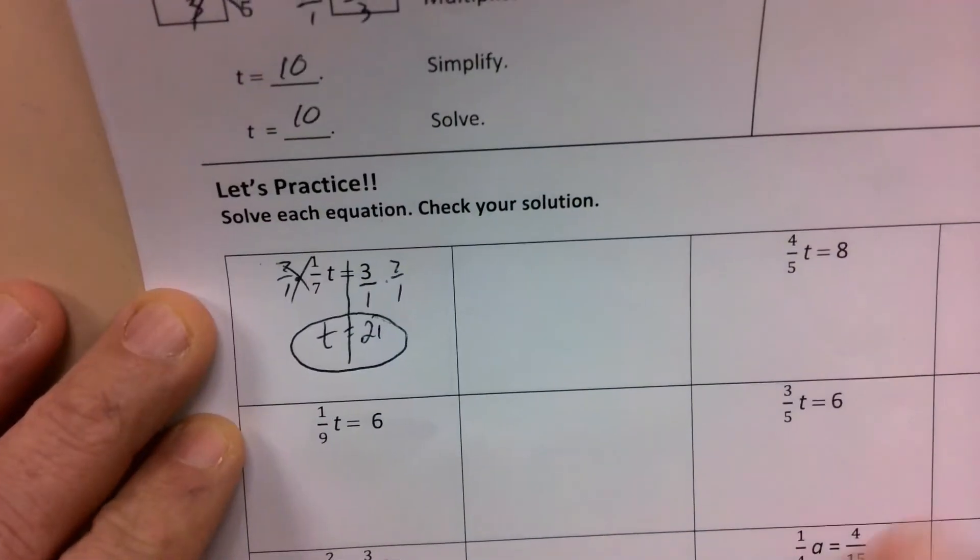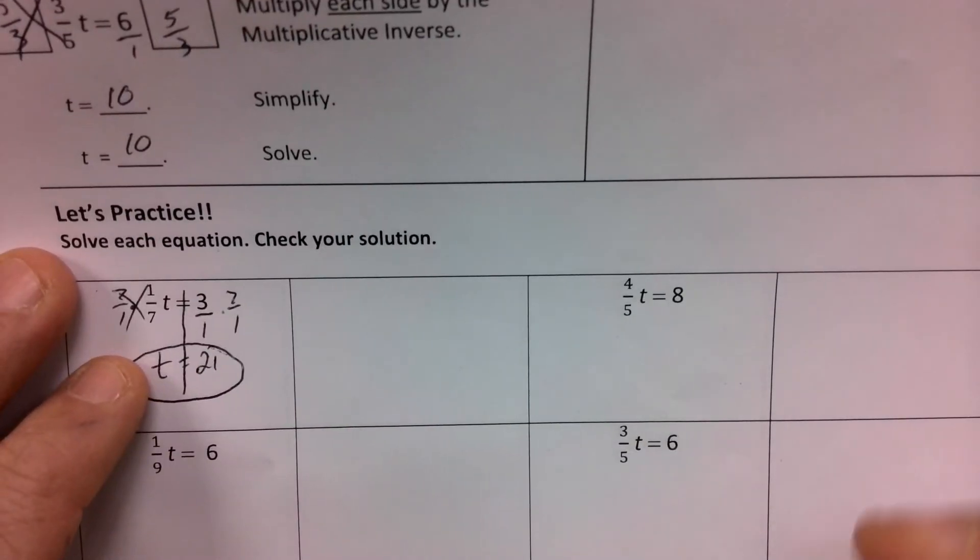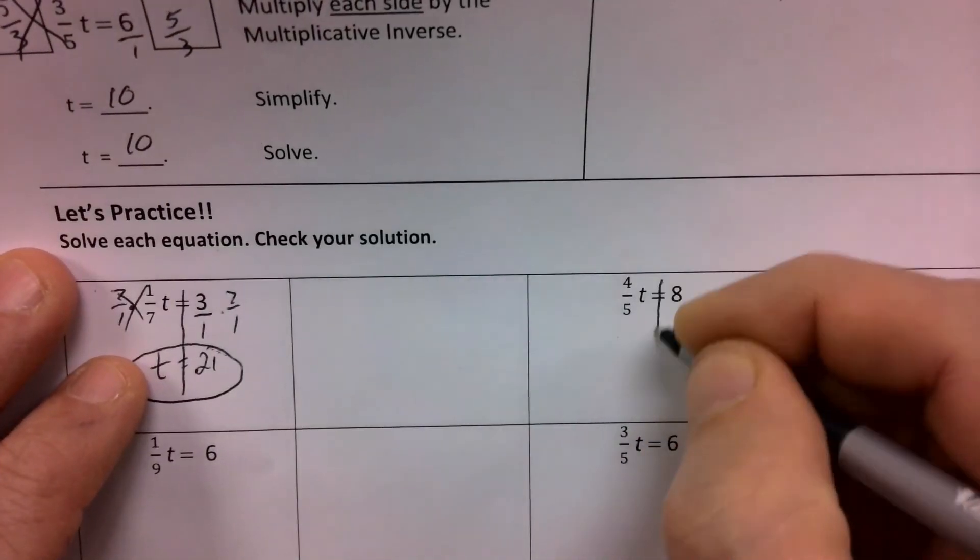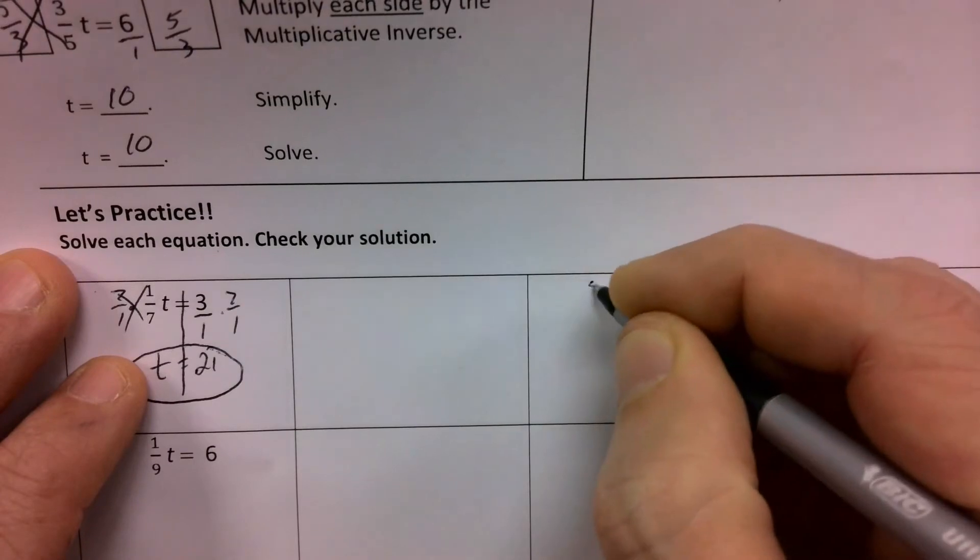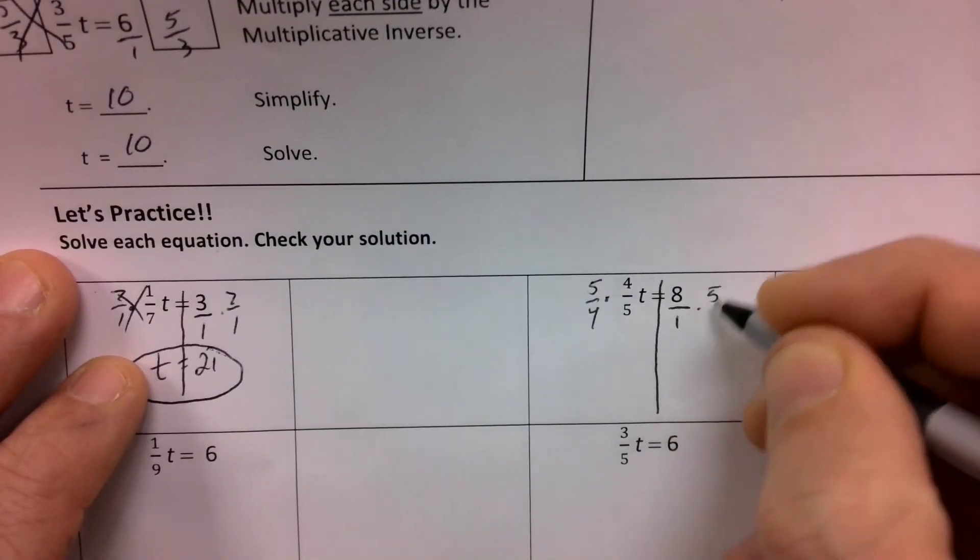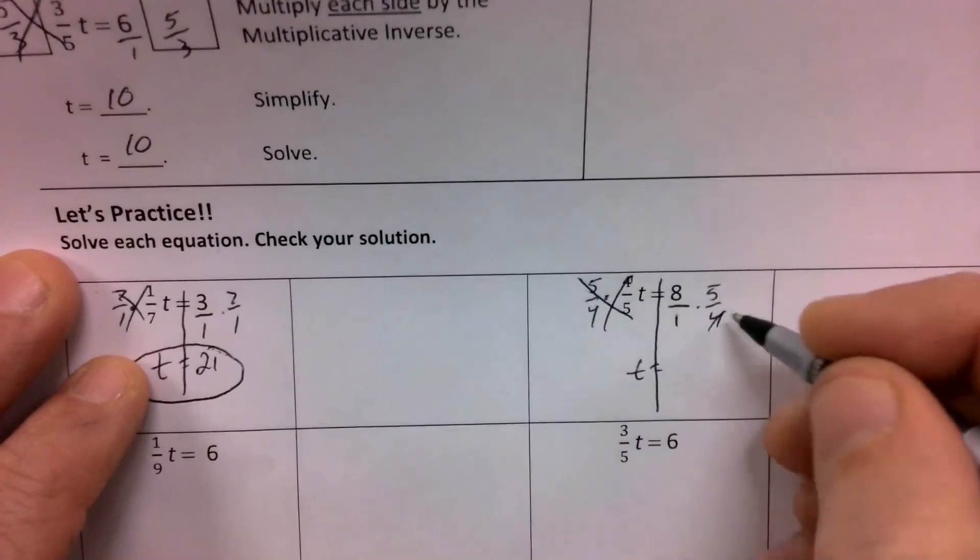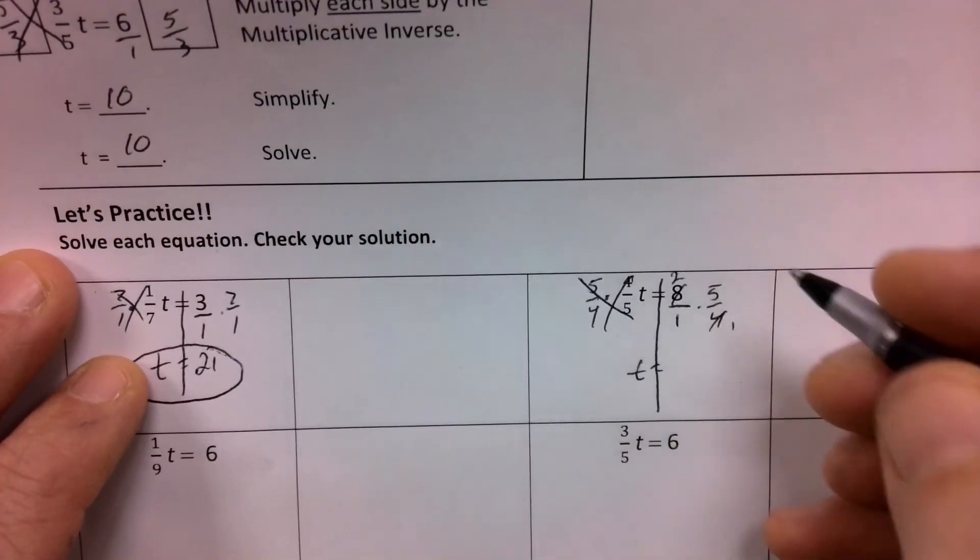Okay. Next one. Four fifths of what number? Four fifths of T is equal to eight. Times five fourths. Take eight over one times five fourths. Cancel out. T is equal to. Cancel. Cancel. I'm going to do that. T is equal to ten.